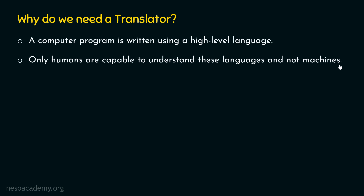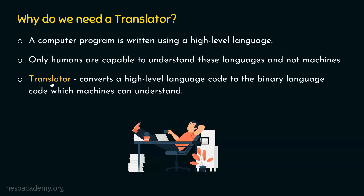There is a communication gap between humans and machines. Humans are capable of understanding high-level programming languages, while machines are capable of understanding low-level or binary language. This is the reason why we need a translator. A translator is a piece of software which converts a high-level language code to the binary language code which machines can understand. We need a translator to convert the high-level language code to binary code which machines eventually can understand.